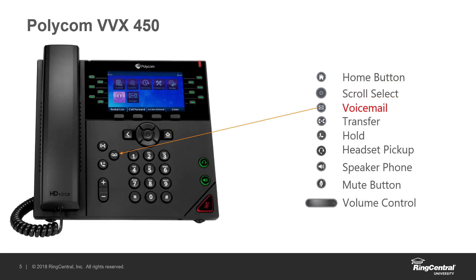Next we have the voicemail button. It looks like the voicemail symbol — those two circles. You can press that button and it'll ask you to enter your voicemail PIN, which I'll go over later. You can check your voicemail or access voicemail settings from that button. Next we have a transfer button — a hard key on the phone. There are also four soft keys below the screen; one of those during an active call will say 'transfer.' You can use either the hard button or the soft key to transfer a call.